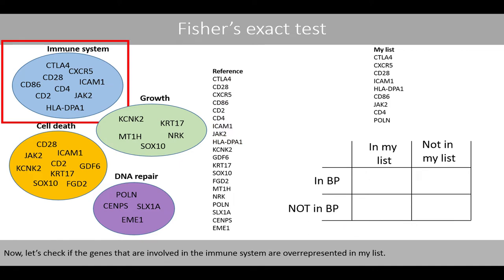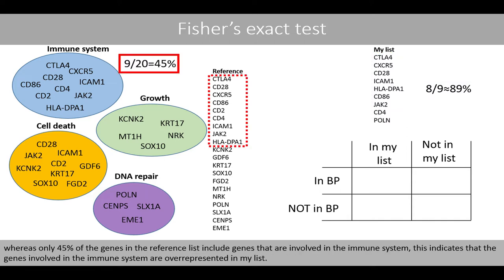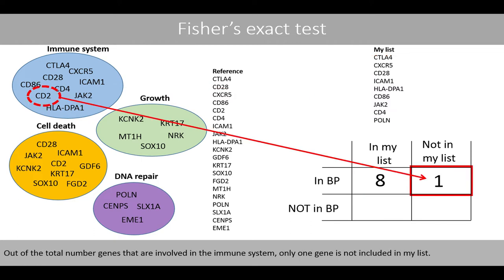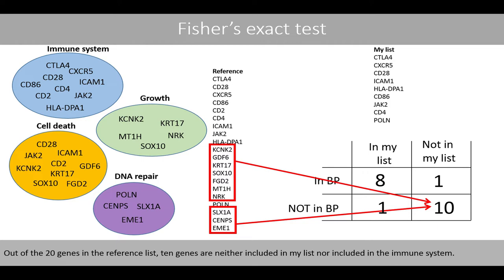Now, let's check if the genes involved in the immune system are significantly overrepresented in my list. Since about 89% of the genes in my list include genes involved in the immune system, whereas only 45% of the genes in the reference list include genes involved in the immune system, this indicates that the genes involved in the immune system are overrepresented in my list. My list includes eight genes involved in the immune system. Out of the total number of genes involved in the immune system, only one gene is not included in my list. Only one gene in my list is not involved in the immune system. Out of the 20 genes in the reference list, 10 genes are neither included in my list nor included in the immune system.